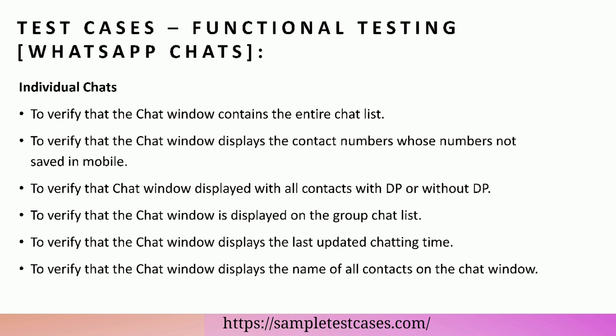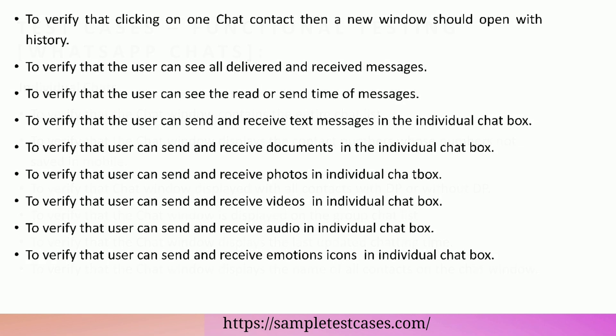Functional testing — WhatsApp chats, individual chats: to verify that the chat window contains the entire chat list. To verify that the chat window displays contact numbers whose numbers are not saved in mobile. To verify the chat window displayed with all contacts with DP or without DP. To verify that the chat window displays the group chat list, the last updated chatting time, and the name of all contacts.